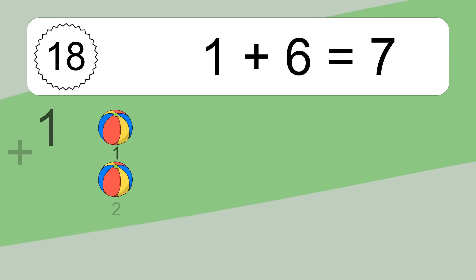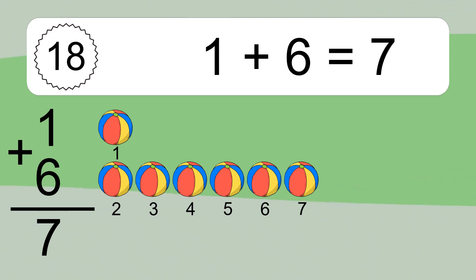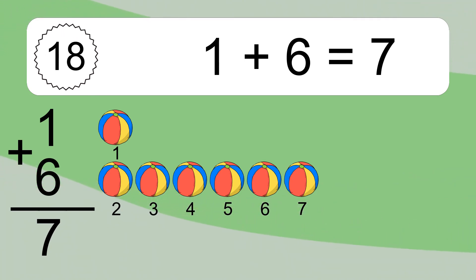1 plus 6 equals 7. Let's count it: 1, 2, 3, 4, 5, 6, 7.